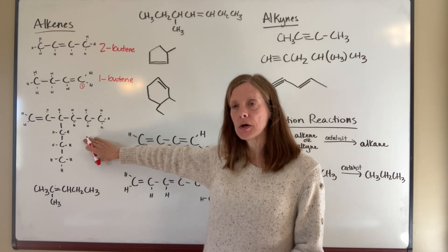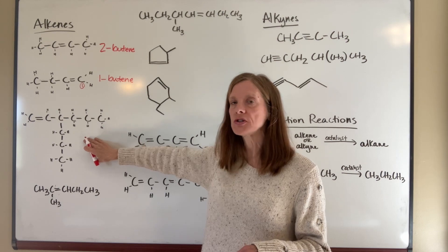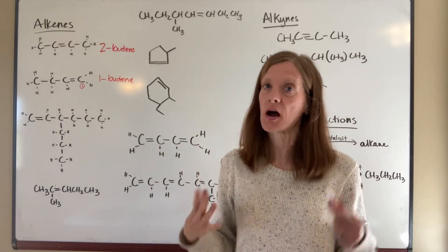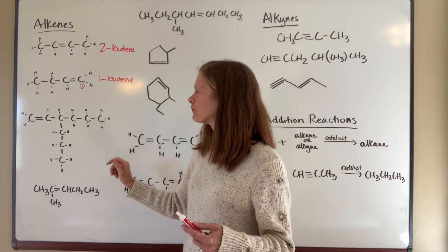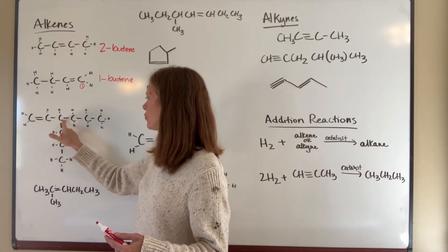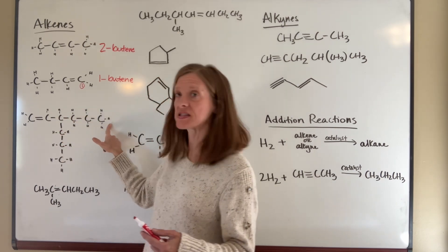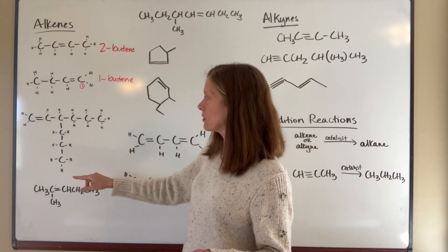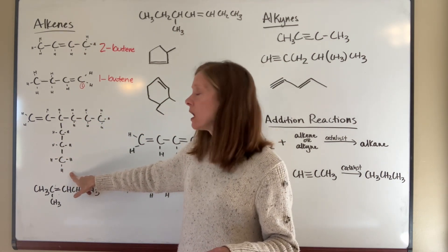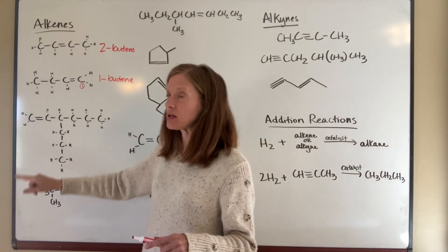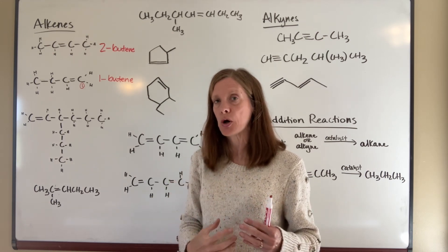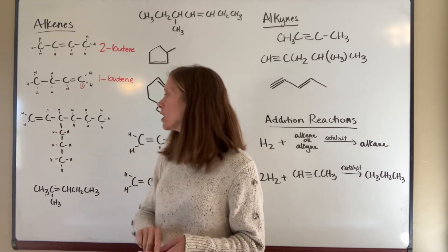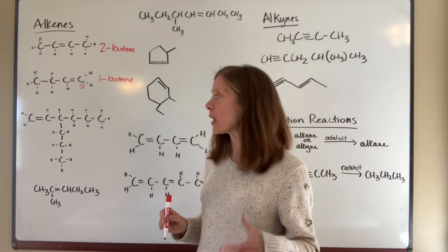When naming an alkene, you must number the longest chain that contains the double bond. You may have a longer chain, but if it doesn't contain the double bond, that's not the proper way to name it. Double bonds take priority over single bonds in the naming hierarchy, so you must include the double bond in your chain. You also want to give the double bond the lowest possible number.